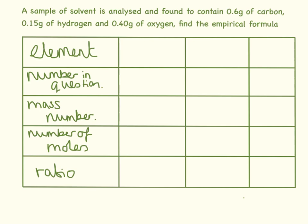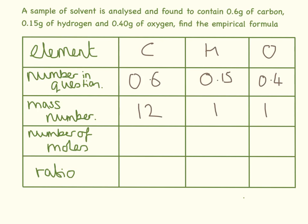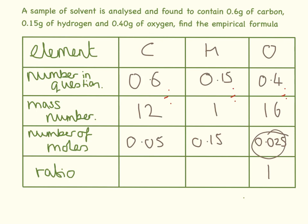Here we have three elements: carbon, hydrogen, and oxygen, with 0.6 grams of carbon, 0.15 grams of hydrogen, and 0.4 grams of oxygen. Mass numbers: carbon 12, hydrogen 1, oxygen 16. Dividing: 0.6 divided by 12 equals 0.05; 0.15 divided by 1 is 0.15; 0.4 divided by 16 is 0.025 — the smallest. So: 0.025 divided by 0.025 is 1; 0.05 divided by 0.025 is 2; 0.15 divided by 0.025 equals 6. So we have C2H6O.